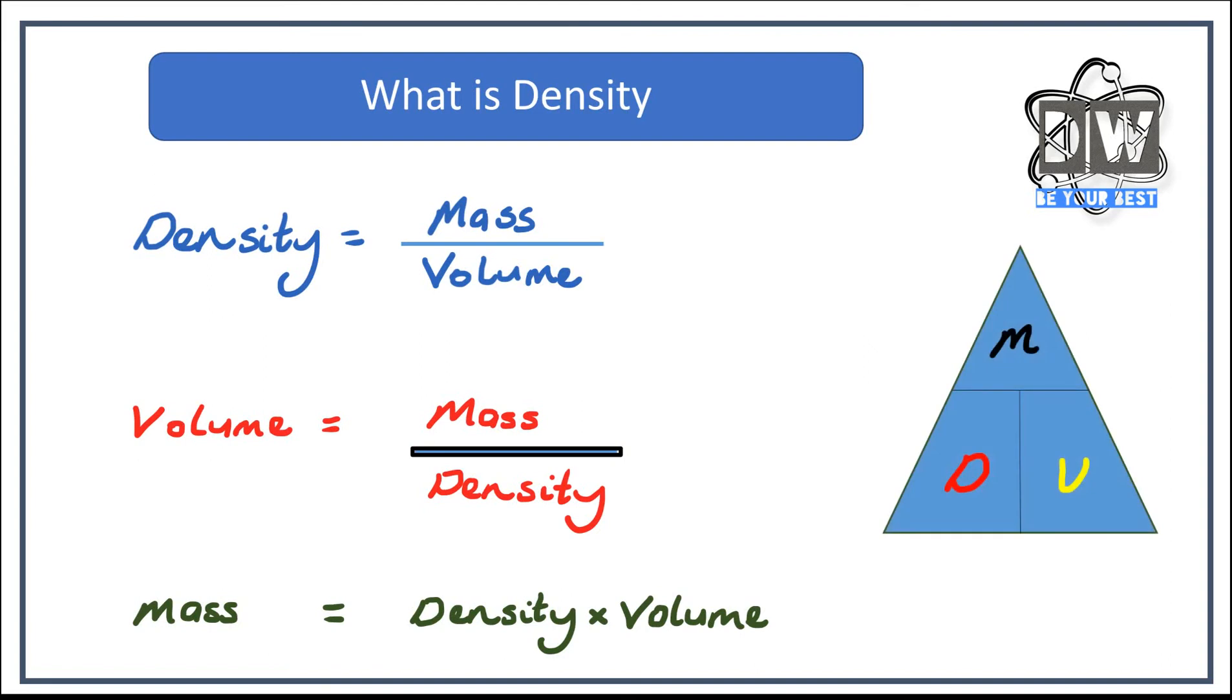The main thing that you'll need to write out and memorize is this little diagram here, which means that we can use all of these. Density equals mass divided by volume, volume equals mass divided by density, and mass equals density times by volume. It's very very useful when we're working these through. Please, please, please make sure that you copy this out before you move on to any of the other slides. It will definitely help you as we go through all of these questions.